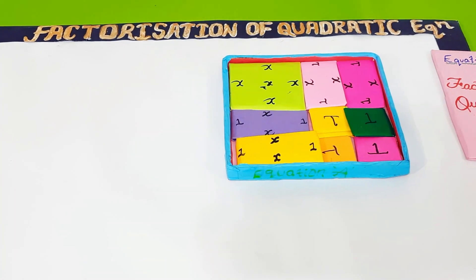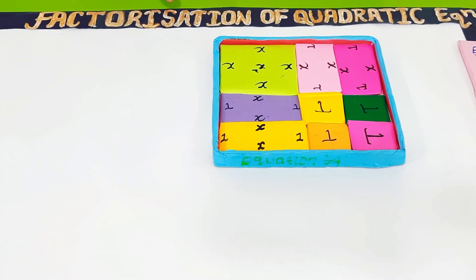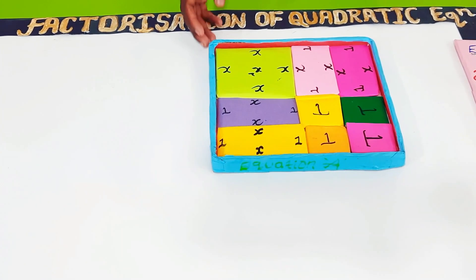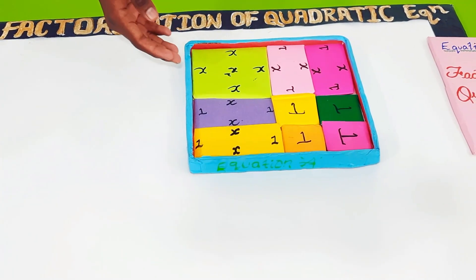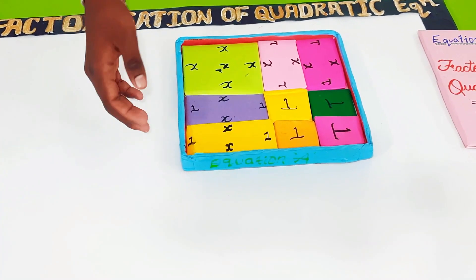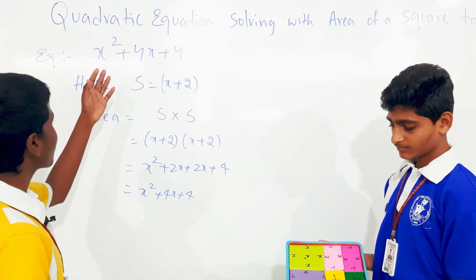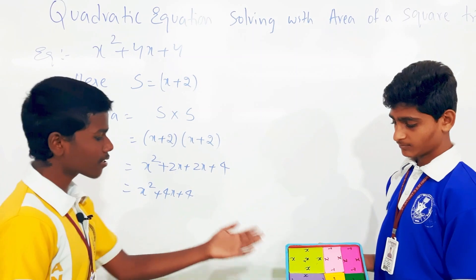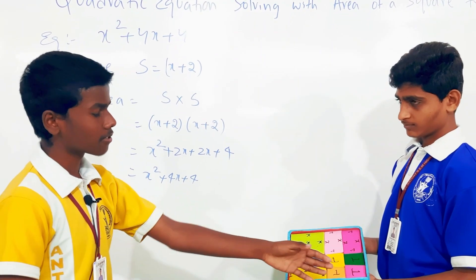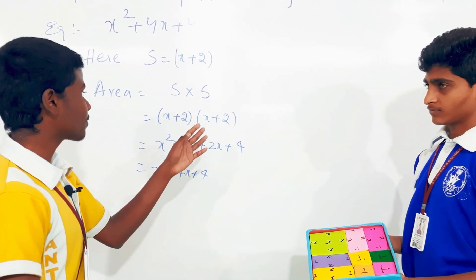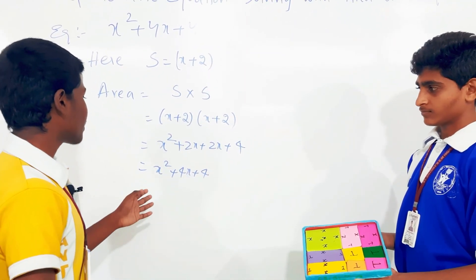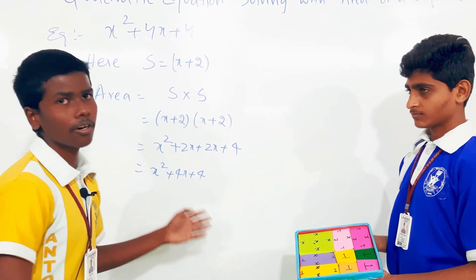The area of the square is equal to side × side. One side is x + 2 and the other side is also x + 2. So we have two factors: x + 2 and x + 2. We will prove this: (x + 2)(x + 2) = x² + 4x + 4. We got the same equation — hence proved.